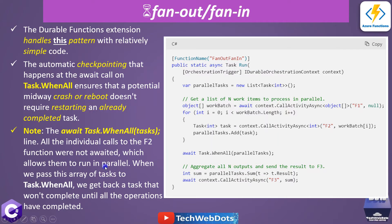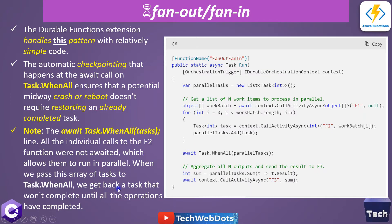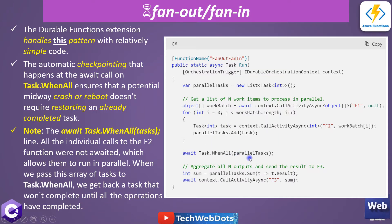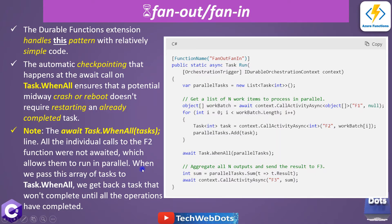When we pass the array of tasks to Task.WhenAll, we get back a task that won't complete until all the parallel tasks have completed. So it waits for all actions to finish. This is pretty straightforward, and I will show you all of this in action — let's jump into Visual Studio.